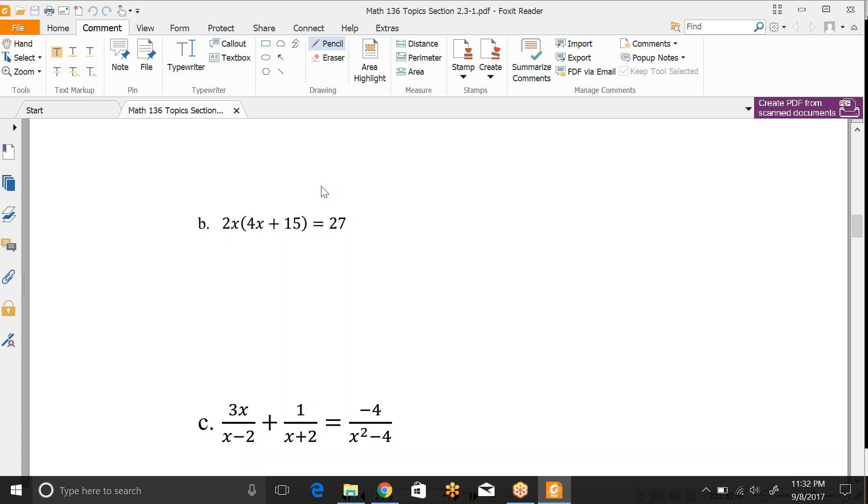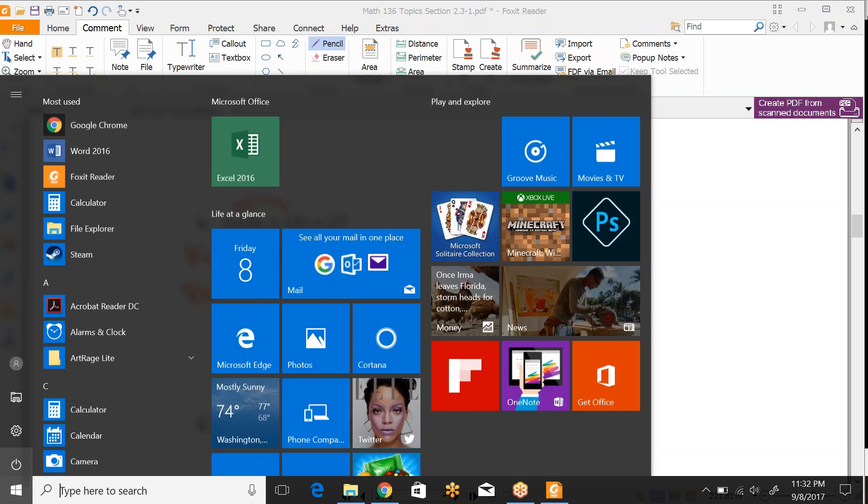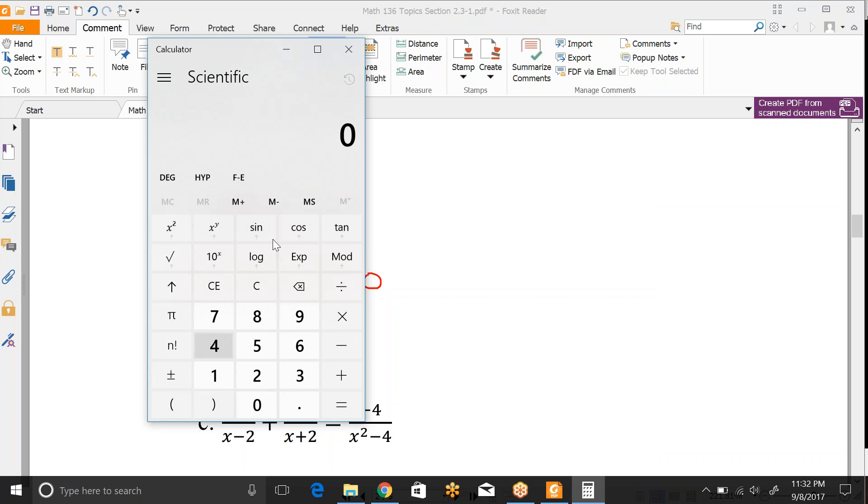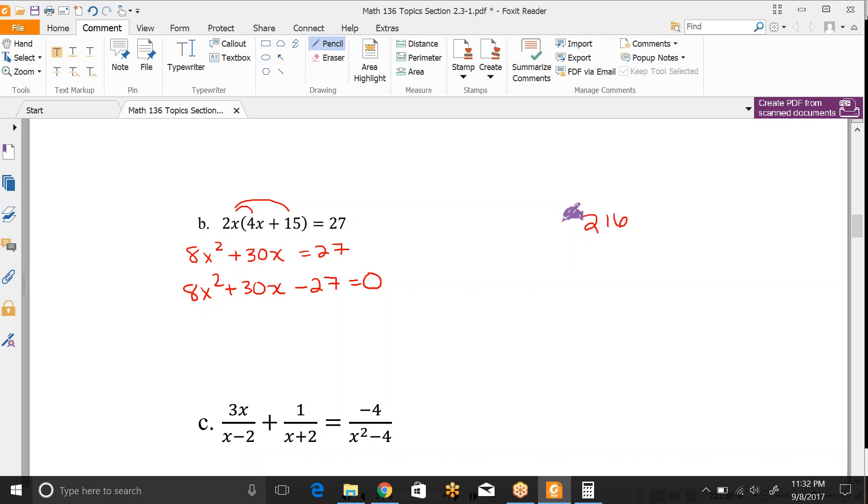We're going to look at this one right now. So remember to factor and solve, we have to get everything on one side in standard format. Since this is not set equal to zero, I distribute this out. So this would be 8x² + 30x = 27. We'll move over the 27 by subtracting it. This is a factor by grouping problem, so we need to do 8 times 27, which is 216. And it is negative since it was negative 27.